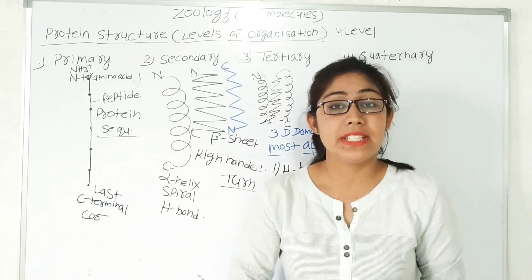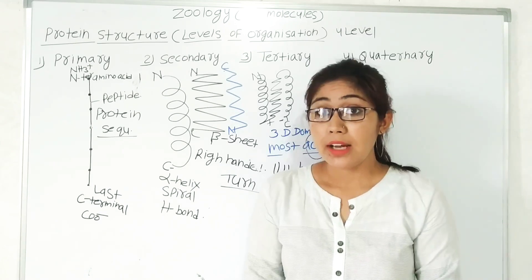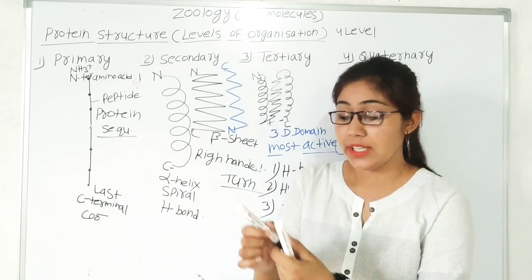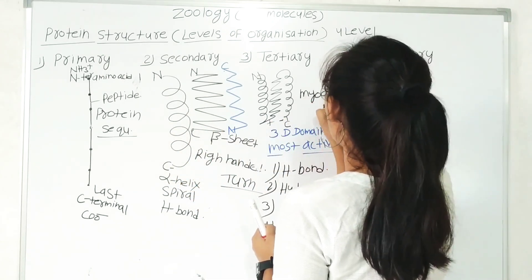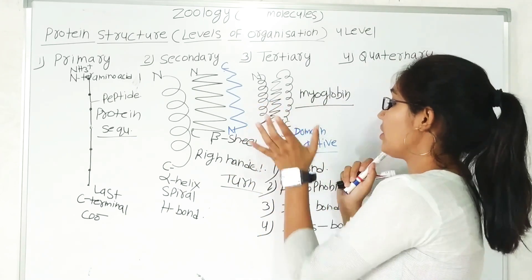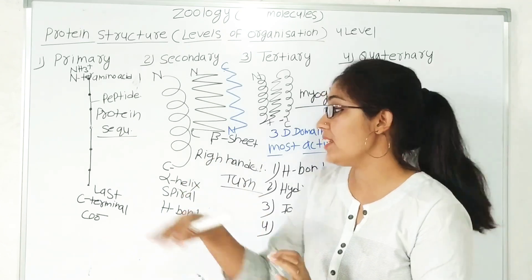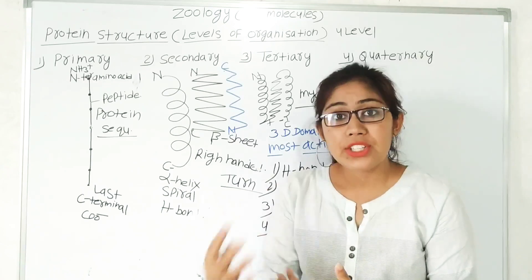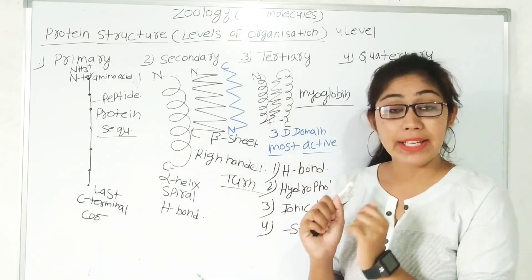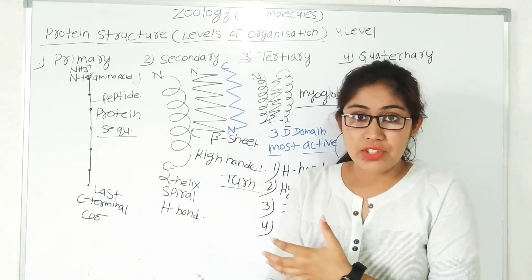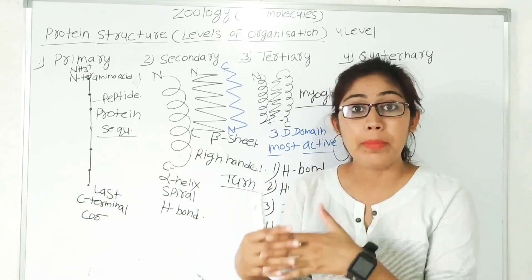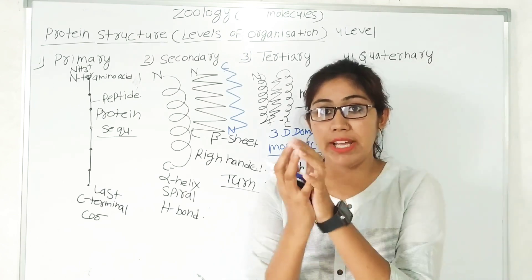Most enzymes and hormones made up of a single subunit exist in their tertiary structure, which is the most active form. For example, myoglobin is a protein with a single subunit present in its 3D tertiary structure. Proteins in primary and secondary structure are not active and not functional. For proper functioning, a protein or enzyme or hormone must fold into its tertiary structure — a three-dimensional domain.